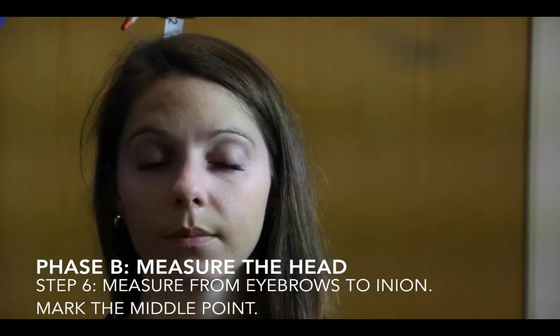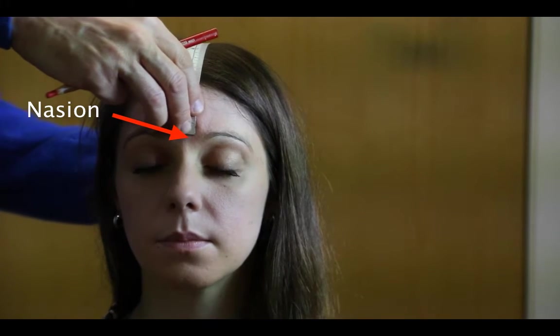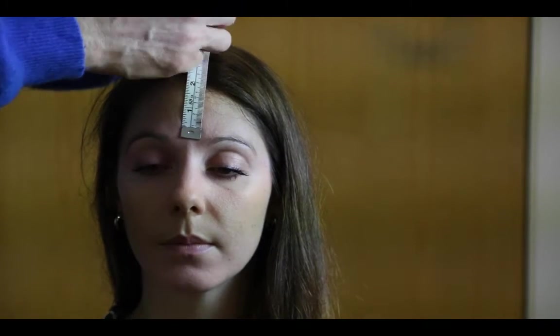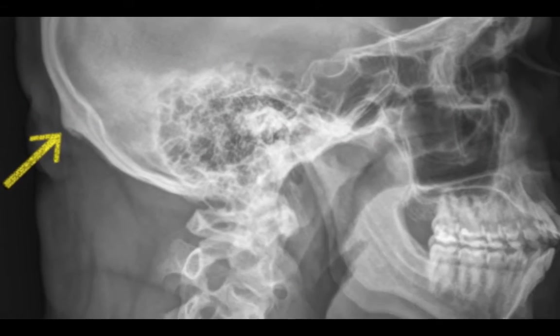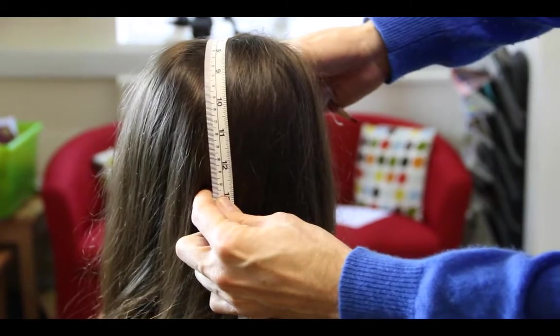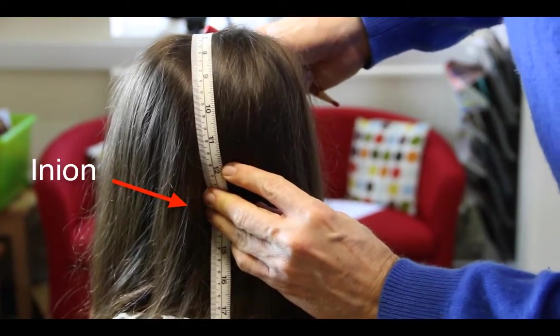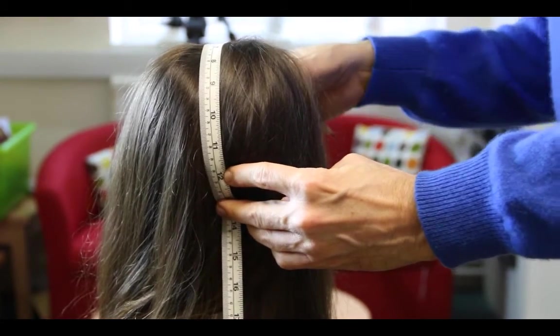Next, you're going to measure from the nasion, which is the point right in between the participant's eyebrows, to the inion. The inion is a bony projection at the back of the skull. You can feel it with your fingers. Once you've found these two points, hold the tape measure, divide by two to find the center, and make another mark.